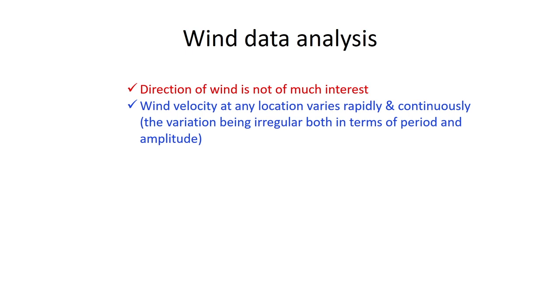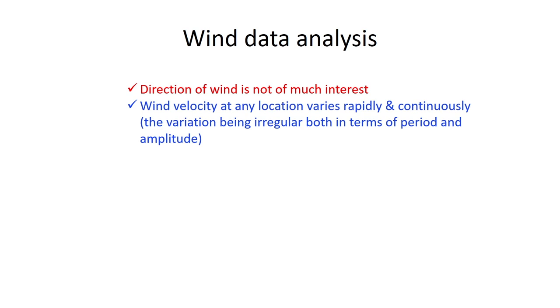As far as wind data analysis is concerned, we must know some basic information. For example, what kind of instrument is used for measurement of wind speed — it is an anemometer; mostly vane type anemometer is used. We know velocity has both dimension and direction, but in our case we are more interested about the magnitude of the speed. Direction of wind is not much of interest, and wind velocity at any location varies rapidly and continuously, the variation being irregular both in terms of period and amplitude.